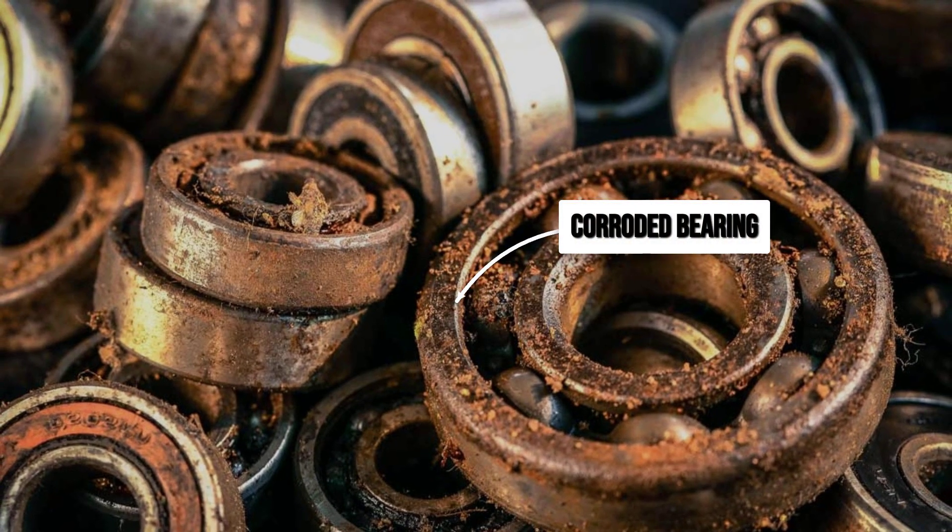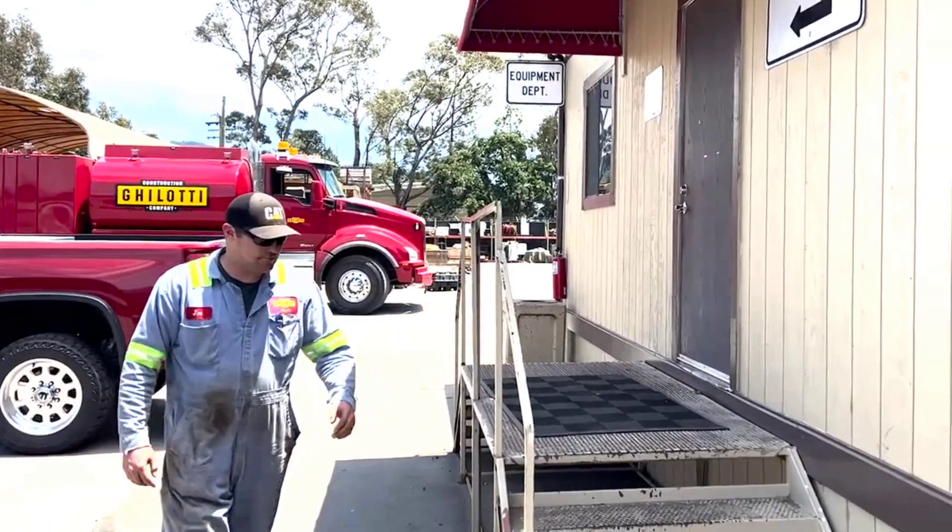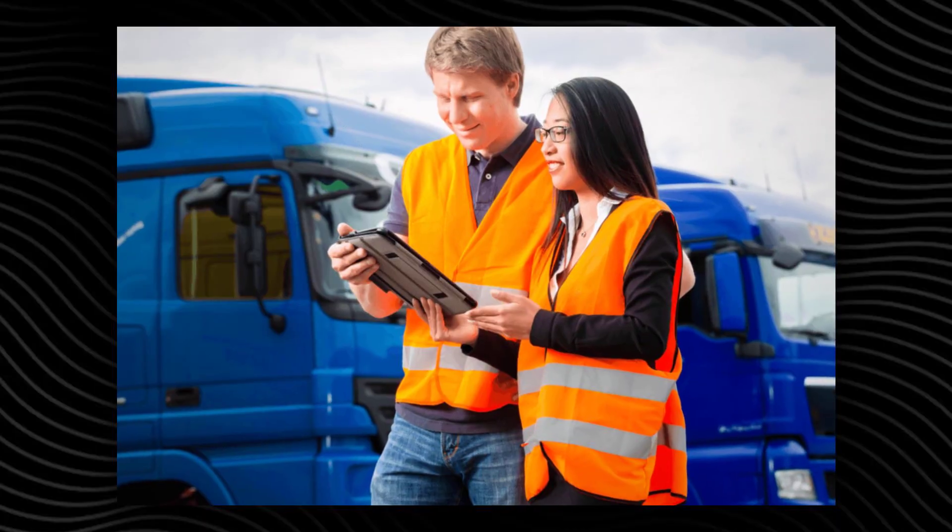Rotella T6 meets and surpasses the industry's strict corrosion limits, comfortably clearing the threshold set for both chain elongation and lead corrosion weight loss.